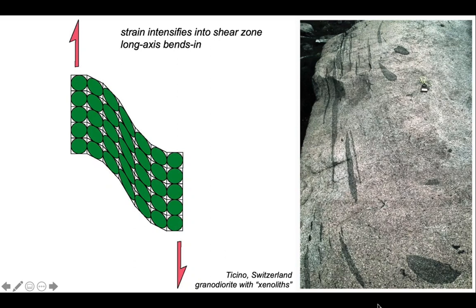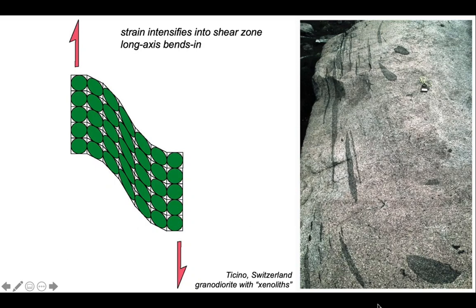and you can see across the outcrop that the intensity of the ellipticity of these objects increases. Well, we're looking at half a shear zone, so let's get half a shear zone in half and let's interpret the outcrop.